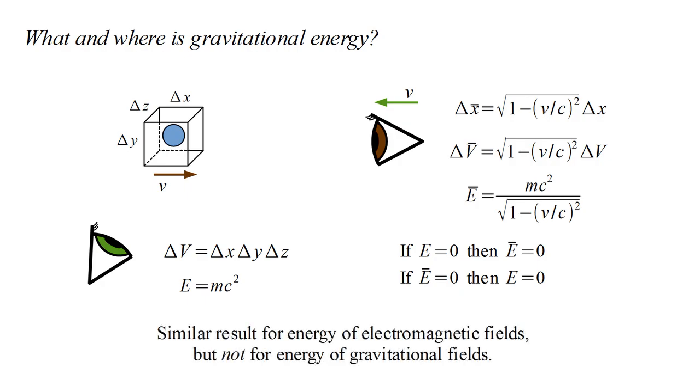In general relativity, there is a similar result for the energy of electromagnetic fields. Electromagnetic energy can be localized. If one observer measures non-zero electromagnetic energy at some point of space-time, then other observers will also. If one observer measures zero, then all other observers must also.